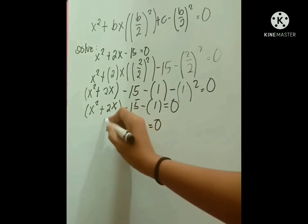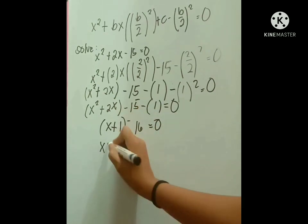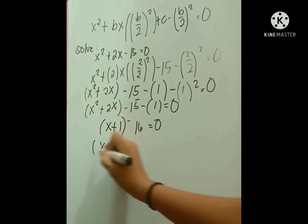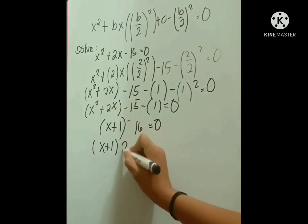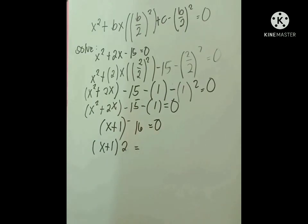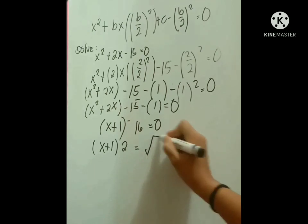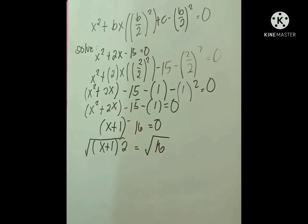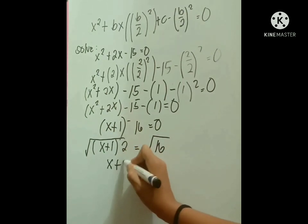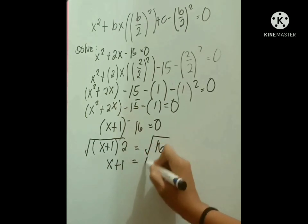Next is we need to get the square root of both equations. We need to write this: x plus 1 times 2 equals square root of 16. We will also find the square root of the first equation. So x plus 1 equals 4, since 4 is the square root of 16.